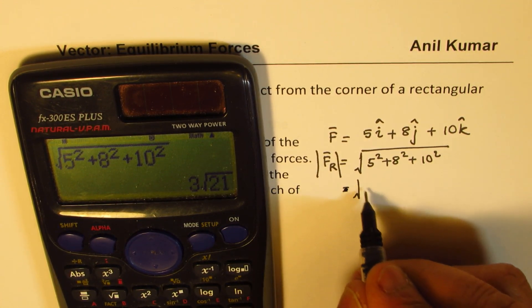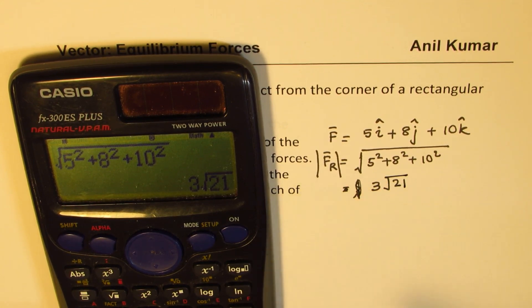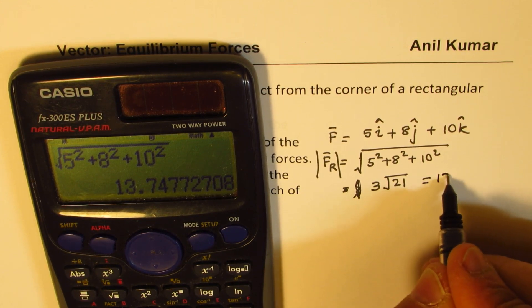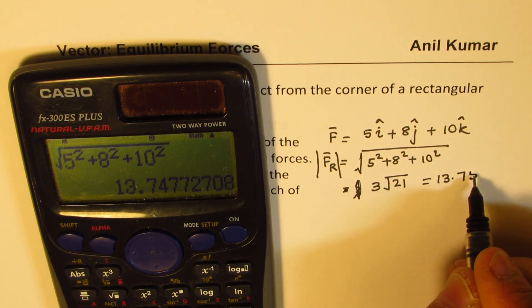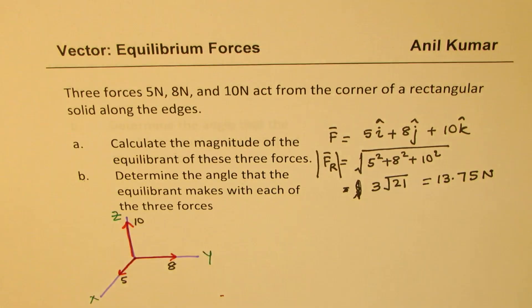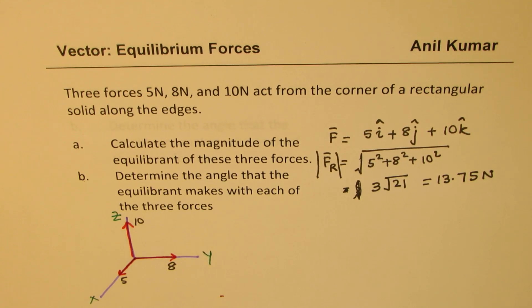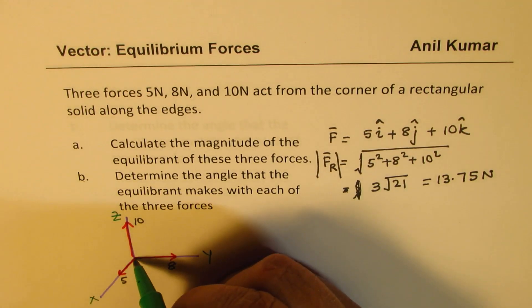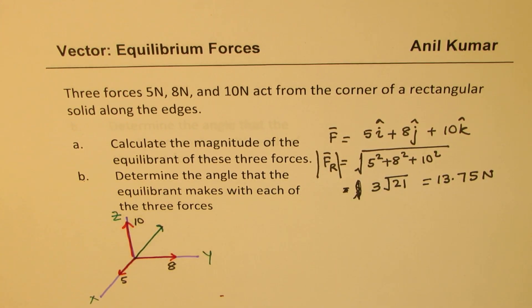Within the square root we have 5² + 8² + 10², which equals 3√21. In decimals, that is approximately 13.7477, so let's write 13.75 Newtons. That is the resultant force acting on this object.